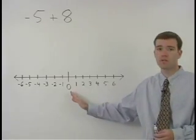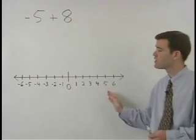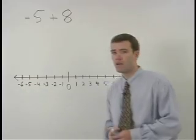On a number line, zero is in the middle, all numbers to the right of zero are positive, and all numbers to the left of zero are negative.